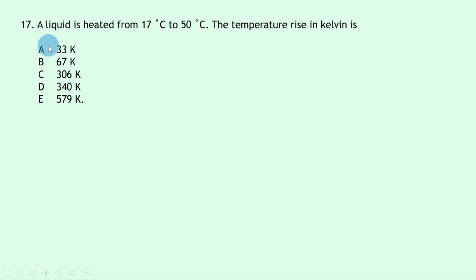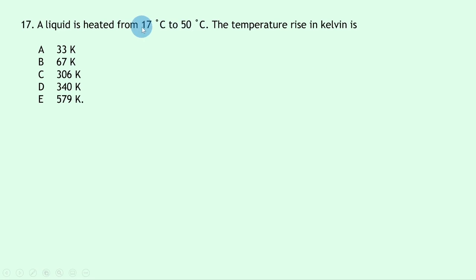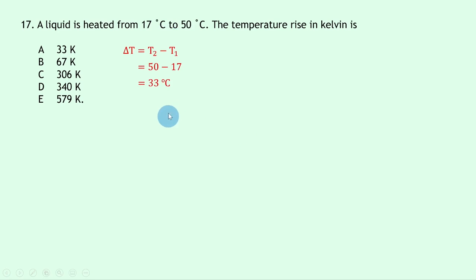Question 17: a liquid is heated from 17°C to 50°C. A temperature change in Kelvin is identical to a temperature change in degrees Celsius. ΔT = 50 − 17 = 33°C, so the temperature rise is 33 Kelvin. The answer is A.